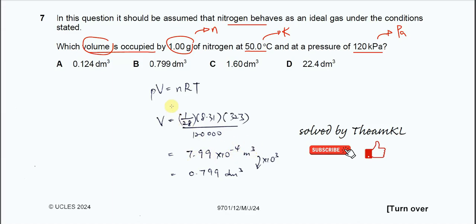Because you use PV equals nRT, the volume you obtain will be in meters cubed. You need to convert meters cubed to decimeters cubed by multiplying by 1000. This gives you 0.799 dm cubed. So the answer is B. That's all, thank you.